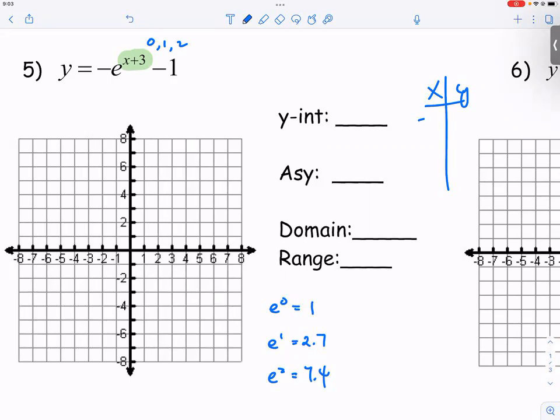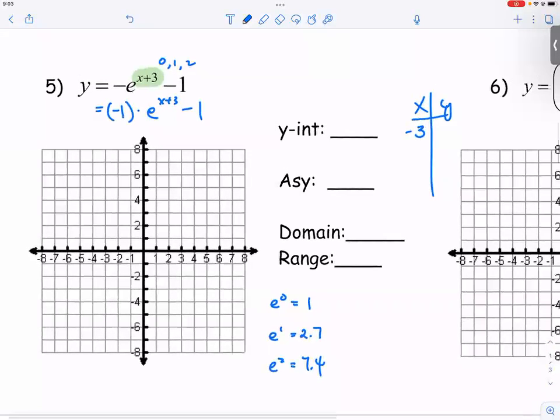Maybe negative 3. So if you have x value of negative 3, negative 3 plus 3 is 0. E to the zero is 1. Now, here's the part where you have to be very careful. When we say negative e to the x plus 3 power, the x plus 3 power only applies to the e, not to the negative 1. So you may want to write the negative 1 outside like this.